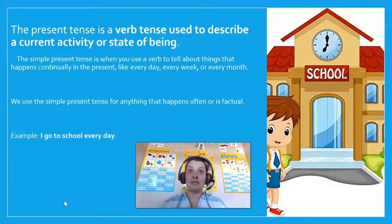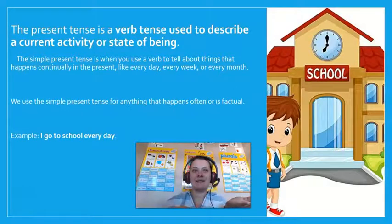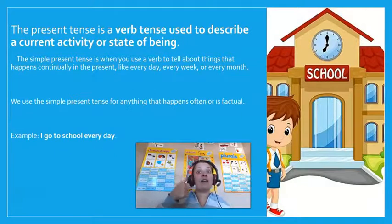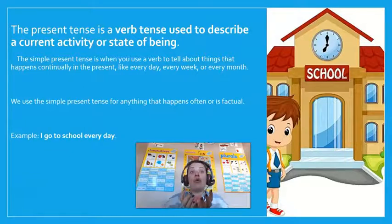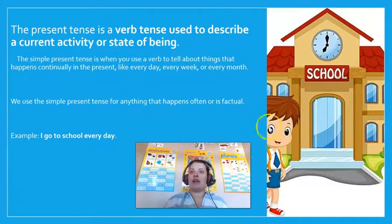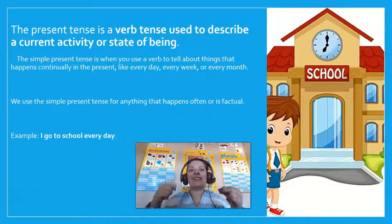The present tense is a verb tense used to describe a current activity or a state of being. The present tense is when you use a verb to tell about things that happen continuously — for example, in the present, like every day, every week, or every month. We use simple present tense for anything that happens often or is factual. For example: 'I go to school every day,' 'he goes to school every day.' It happens often — that's why it is called simple present tense.